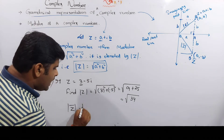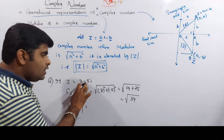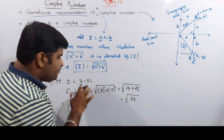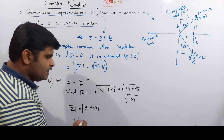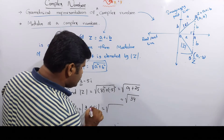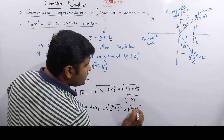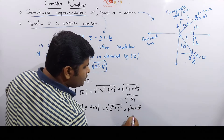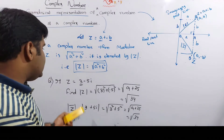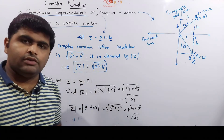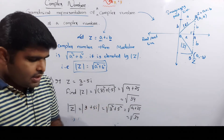Now let's find the modulus of z-conjugate. The conjugate of z is 3 plus 5i. Using the formula, modulus of z-bar equals the square root of 3 squared plus 5 squared, which is the square root of 9 plus 25, which equals the square root of 34. So the modulus of z equals the modulus of z-bar — they are the same.